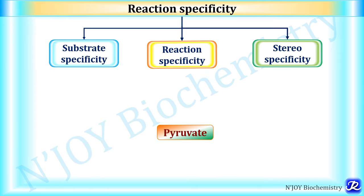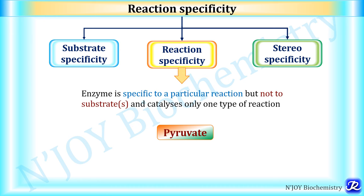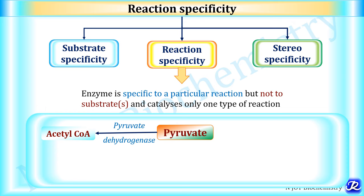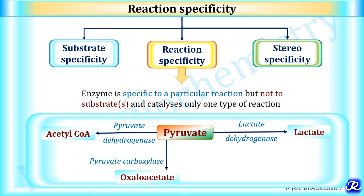In reaction specificity, the enzyme is specific to a particular reaction but not to the substrate and catalyzes only one type of reaction. For example, pyruvate dehydrogenase acts on pyruvate to form acetyl-CoA for the TCA cycle; lactate dehydrogenase acts on pyruvate to form lactate in anaerobic glycolysis; pyruvate carboxylase carboxylates pyruvate to oxaloacetate, important in gluconeogenesis; and alanine transaminase catalyzes transamination of pyruvate to form alanine. The enzyme is specific for the reaction, not the substrate — this is reaction specificity.